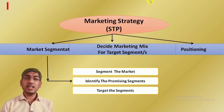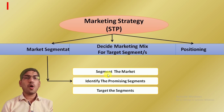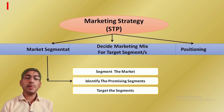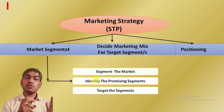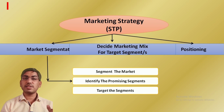Marketing strategy is nothing but the combination of STP. First is market segmentation — we have to segment the market according to the common needs or common preferences of the customer; from the whole market we identify groups of people with common interests. Then identify the promising segment out of say 5 segments. Then target that segment. We have to target the market with the set of marketing mix — product, price, place, promotion — and finally we have to position the product.